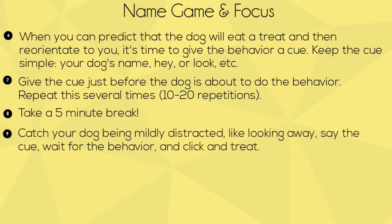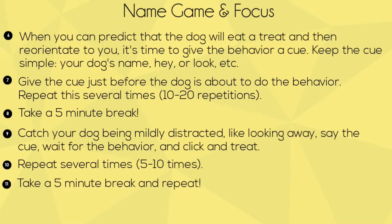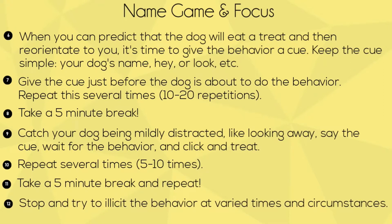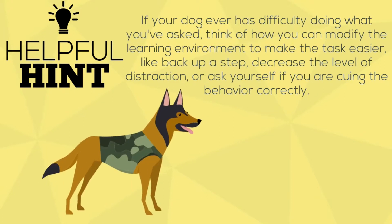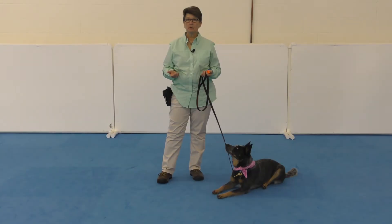Take a short break, catch the dog being mildly distracted, say the cue, wait for the behavior, and click and treat. Repeat several times, take a five-minute break, and repeat. Stop and try to elicit this behavior at varied times and circumstances. Helpful hint: if your dog ever has difficulty, think about how you can modify the learning environment — back up a step, decrease distraction, or check if you are cueing the behavior correctly.